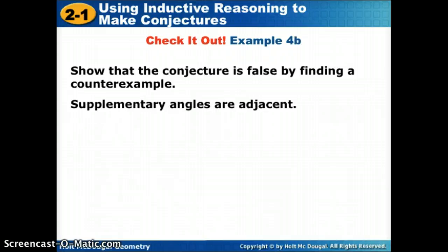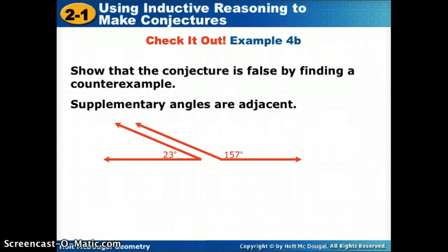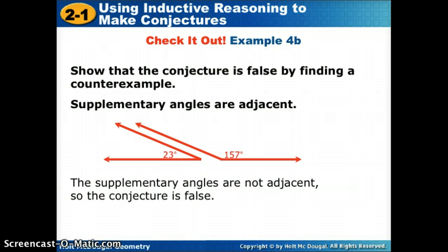Okay, so let's do one where we might use a picture. Supplementary angles are adjacent. So supplementary, we need to know that that means they add up to 180 degrees. And what does it mean to be adjacent? That means they're next to each other. So to be supplementary, does that mean they have to be next to each other? Not necessarily. I can have two angles that add up together, but don't share a side. So they are not next to each other. They're not sharing a side, and they're not sharing a vertex. Not adjacent. In this picture, they're supplementary, but they're not adjacent. So our conjecture is false.